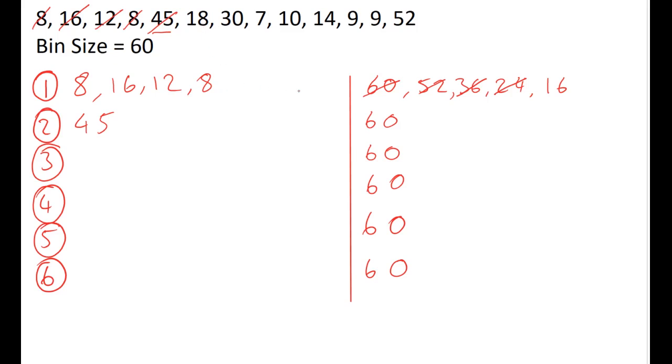The 18 won't fit in the first as we only have 16 remaining, the second one only has 15 remaining, and so it must go into our third bin which now has 42 remaining, and cross that one off.